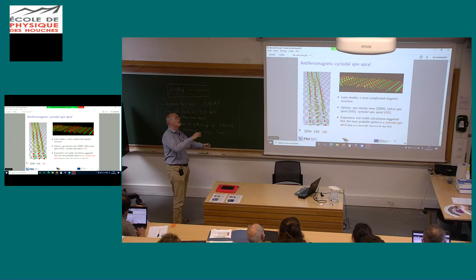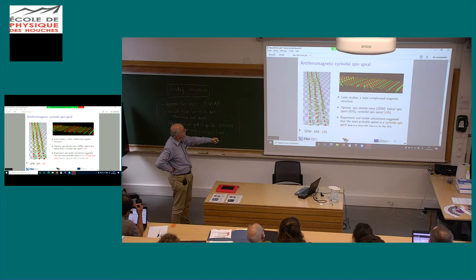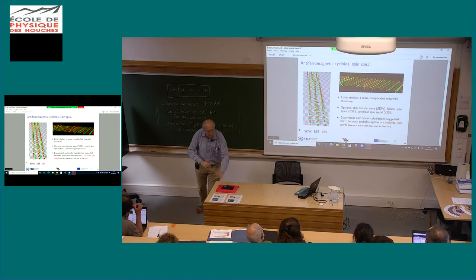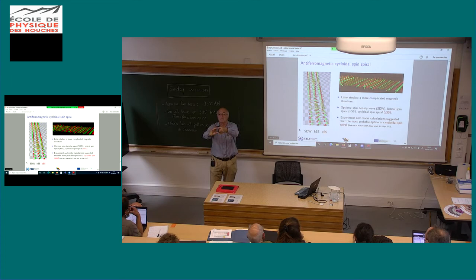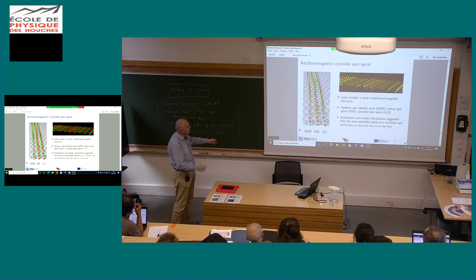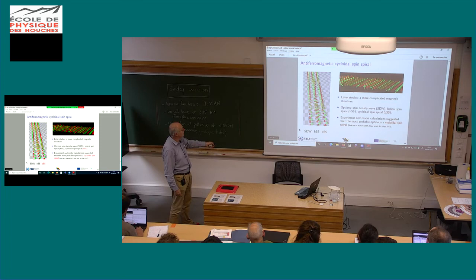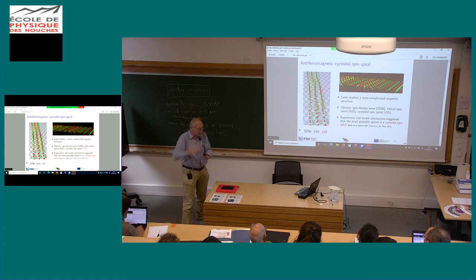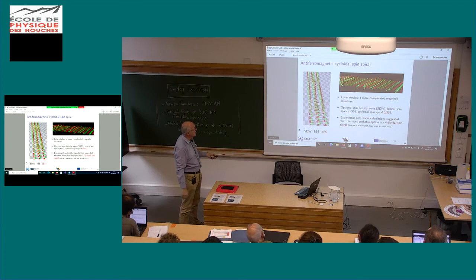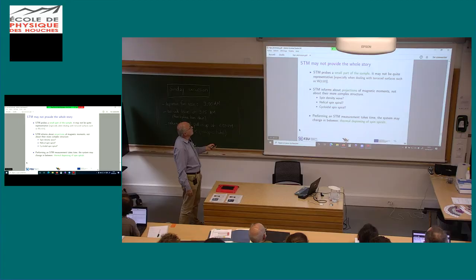Other possible arrangements would give a similar STM picture, like a spin density wave, or the spin spiral could be helical — perpendicular to the propagation direction — and so on. However, scanning tunneling microscopy may not provide the whole story: STM is local, so you probe just a small part of the system and cannot always be sure if the system is messy. The Mn/W system is indeed messy — it's a terrace surface and the tungsten has islands close to the terraces, so it's not homogeneous.